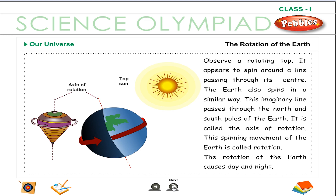The earth also spins in a similar way. This imaginary line passes through the north and south poles of the earth. It is called the axis of rotation. This spinning movement of the earth is called rotation. The rotation of the earth causes day and night.